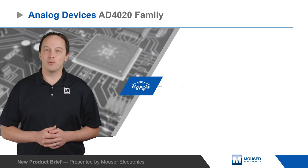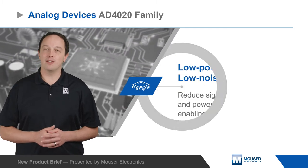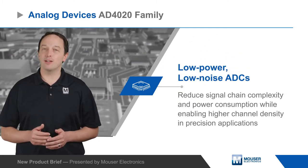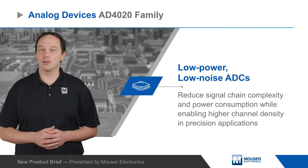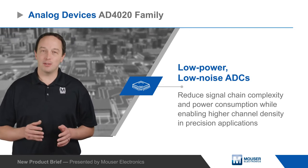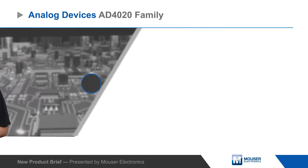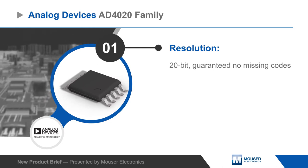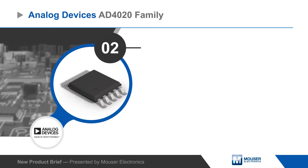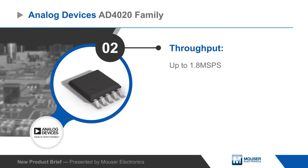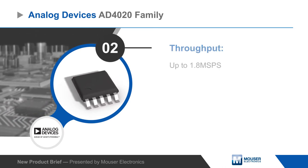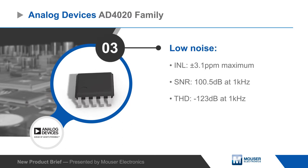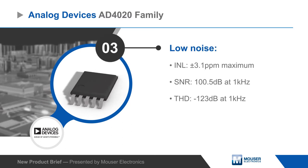Analog Devices AD4020 family of ADCs are low-power, low-noise ADCs that reduce signal chain complexity and power consumption while enabling higher channel density and precision applications. The AD4020 is a 20-bit, 1.8-megasample per second ADC with integral non-linearity of plus or minus 3.1 parts per million and a 100.5 dB signal-to-noise ratio.